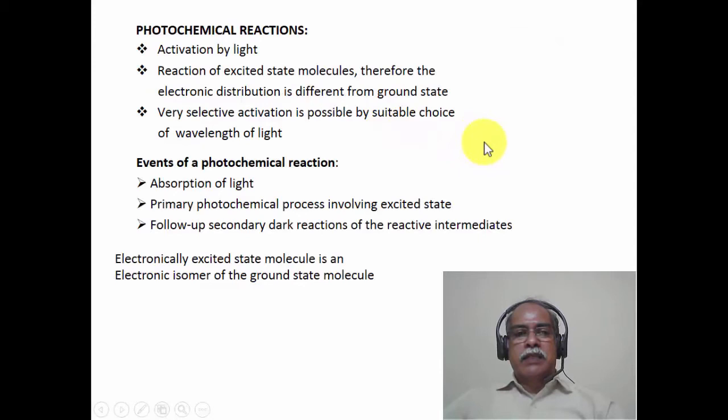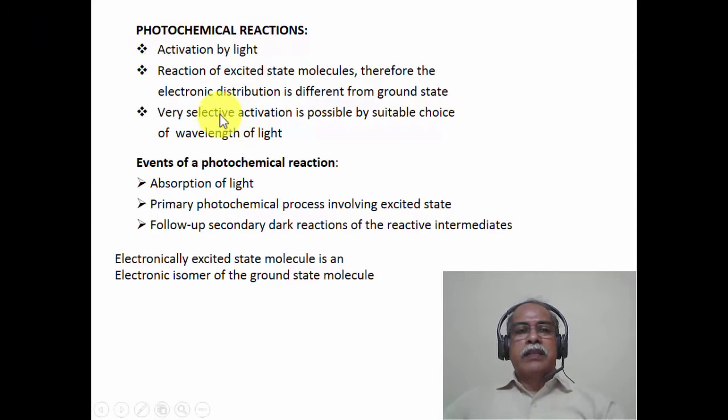Photochemical reactions are essentially reactions which are activated by photon energy. In other words, the activation is by light. The energy associated with the photon is transferred onto the molecule by an electromagnetic radiation–molecule interaction. The reactions involved arise from the excited state of the molecule, where the electronic distribution is different from the ground state.